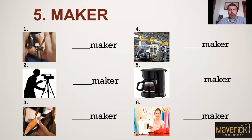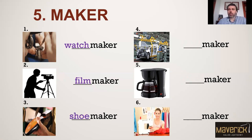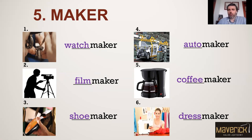Family five: maker. And look — a lot of professions here. All you have to do is add this one short component. Watchmaker, filmmaker, shoemaker, automaker, coffee maker, and dressmaker. A lot of professions again come as words with two components.